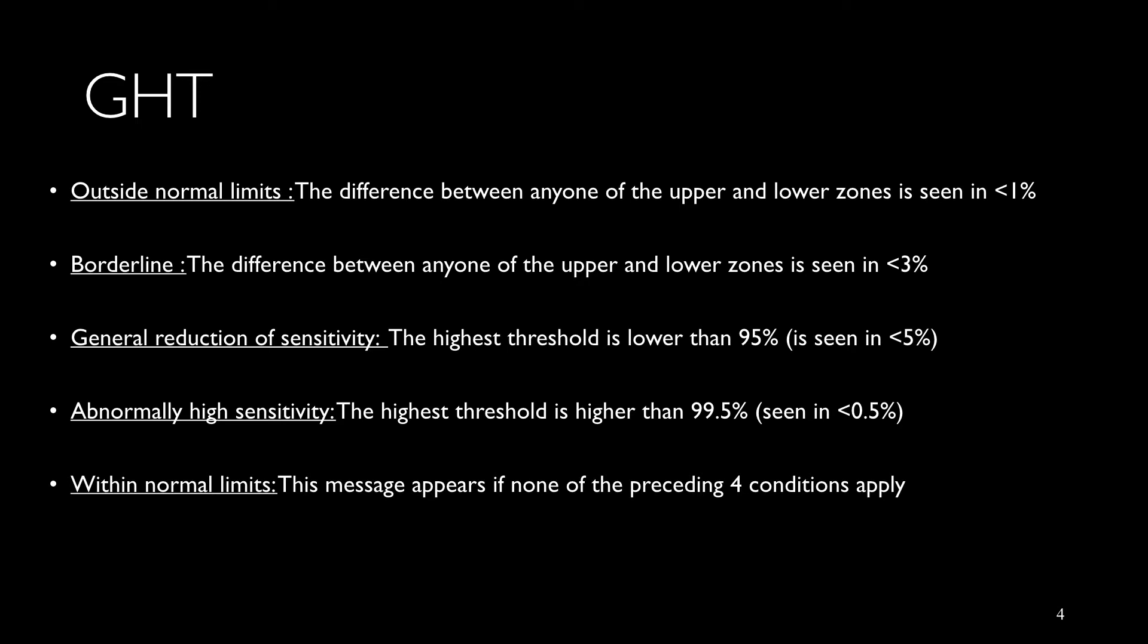When the highest threshold value is lower than 95% of the normal database, it's called general reduction of sensitivity. It's mainly seen in patients with cataracts, miotic pupils, long refractive errors, and occasionally in glaucoma patients.